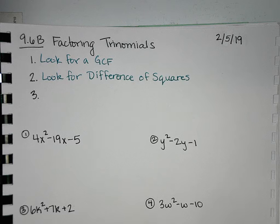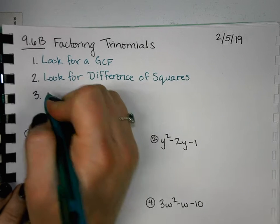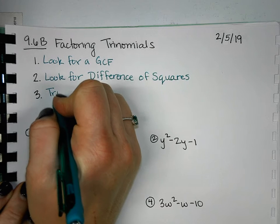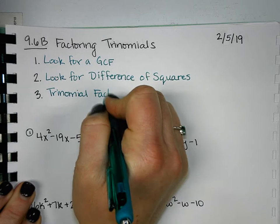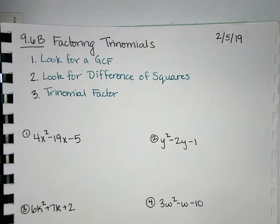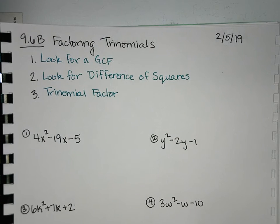But let's say you look for a GCF, you look for difference of squares, and you don't have difference of squares, then you do your trinomial factor. So when you start getting these different types of factoring all mixed together, you're going to just run through this checklist to see which ones you're going to do.